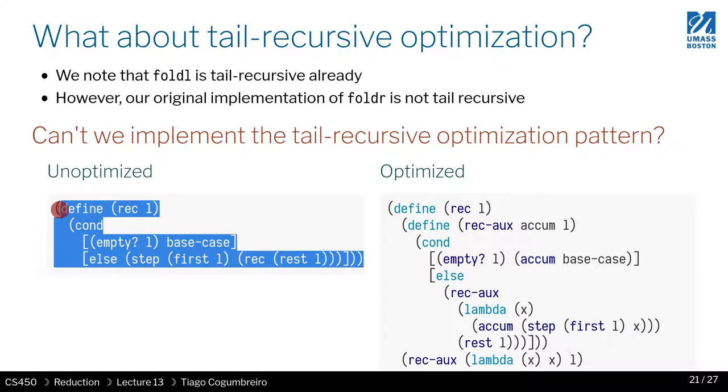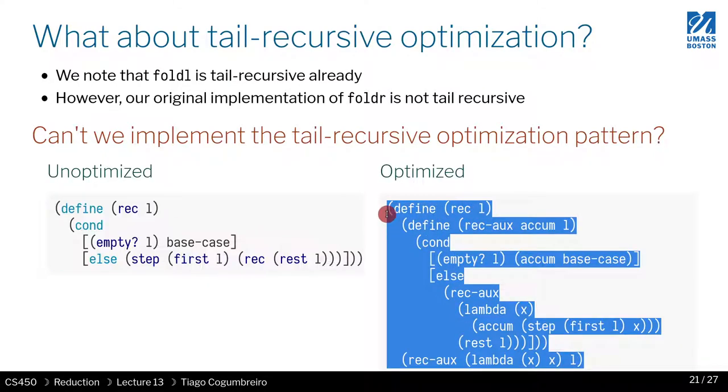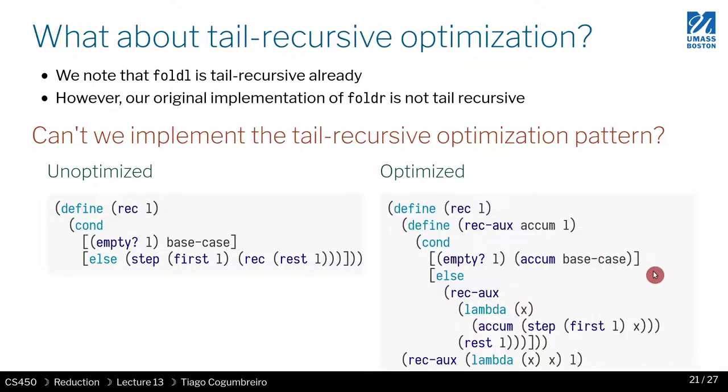This is the generalized pattern, and if you recall, this is the tail call optimization that we came up with. What we can do is implement fold right according to this optimization.